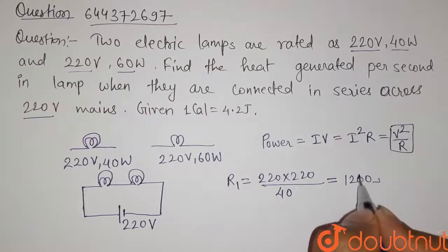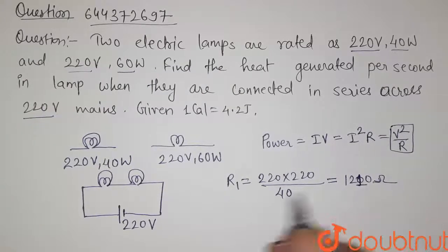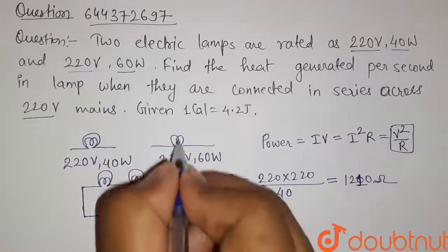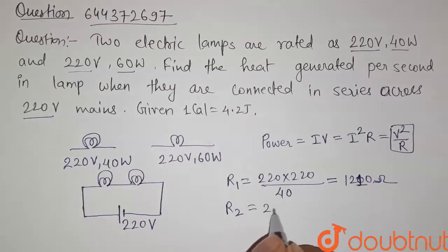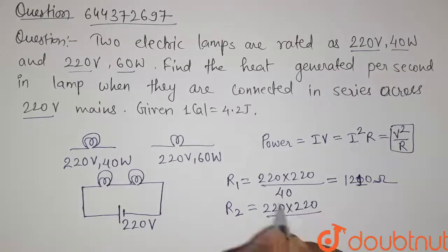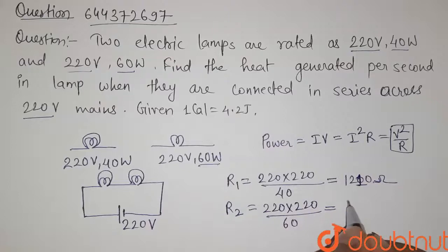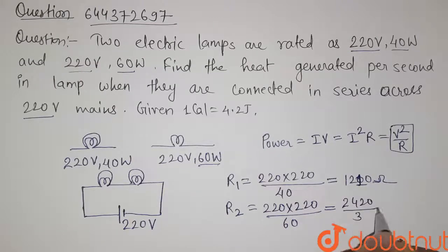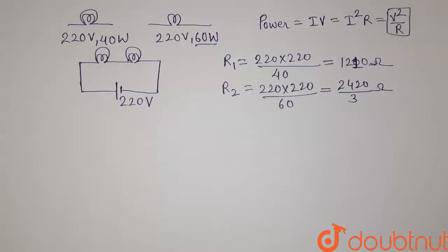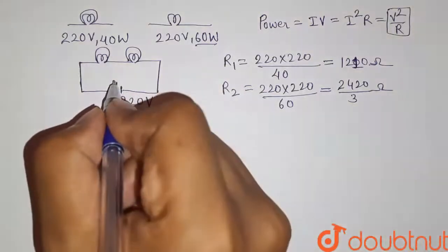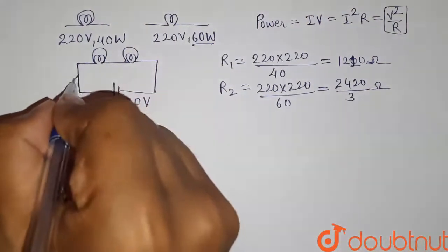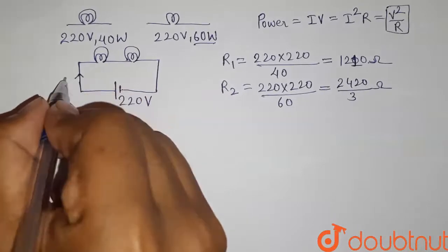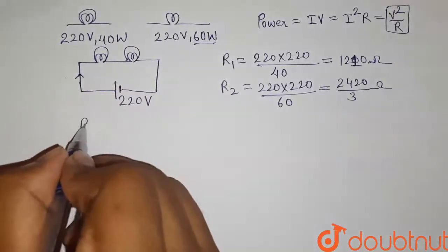The resistance of Lamp 2: R2 = V² / P = 220 × 220 / 60 = 2420/3 ohm. Now the power consumed by these lamps can be found using the relation P = I² × R.